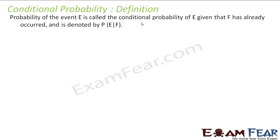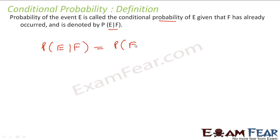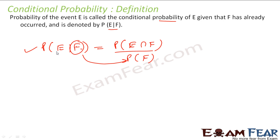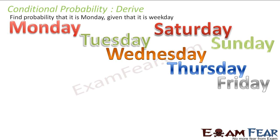Probability of event E is called conditional probability of E given that F has already occurred. I will rewrite and derive this formula: P(E|F) is nothing but the number of outcomes in E intersection F divided by the number of outcomes in F. Let us derive this formula using the same examples we had.